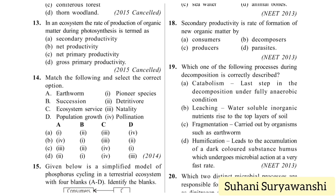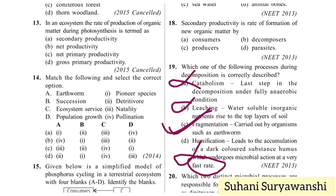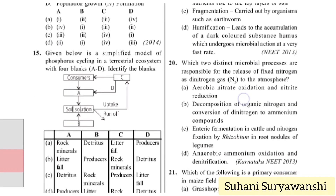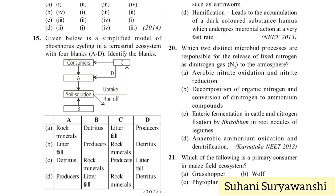Which of the following processes during decomposition is correctly described? Catabolism is the last step — wrong. Leaching: water-soluble inorganic nutrients rise to the top layers of soil — wrong, not top layers. Fragmentation is carried out by organisms such as earthworm. Humification leads to accumulation of dark-colored substance (humus) which undergoes microbial action at very slow rate — not very fast. The correct answer is option C — fragmentation.